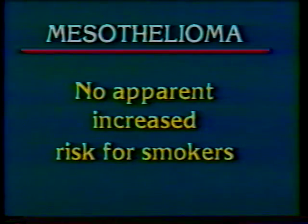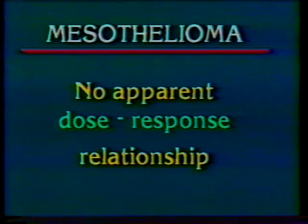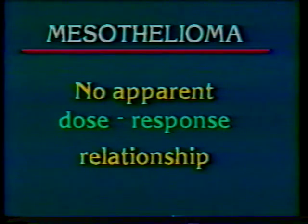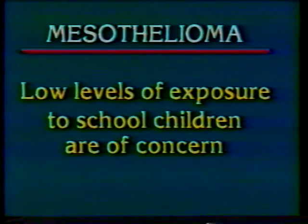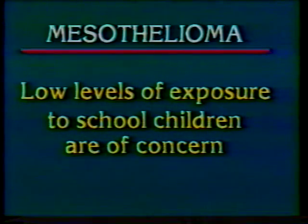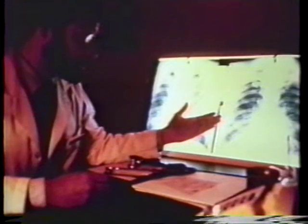There does not appear to be any increased risk of getting mesothelioma for smokers, and there does not appear to be a dose-response relationship between asbestos exposure and mesothelioma. In fact, cases have been recorded where the person's asbestos exposure has been quite limited, such as secondary exposure to family members from a worker's clothing. Like the other asbestos diseases, mesothelioma often takes 30 to 40 years after initial exposure if it occurs. Because of the long latency period and lack of information about what levels are safe, there is concern about low-level exposures to school children.